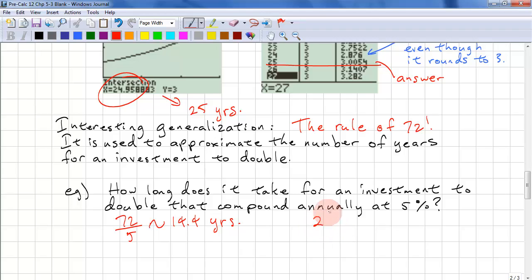Now, we do this on a calculator. 2 equals 1.05 to the x. And you will find that x is approximately 14.2 years. Very close to 14.4 years. And that's great for a generalization because we can do this in our head. And it's very close to the calculator answer.